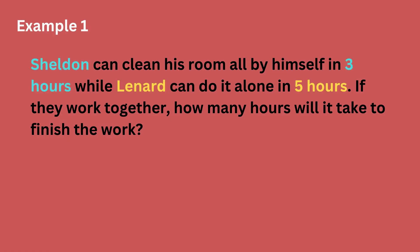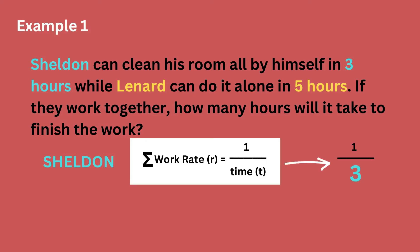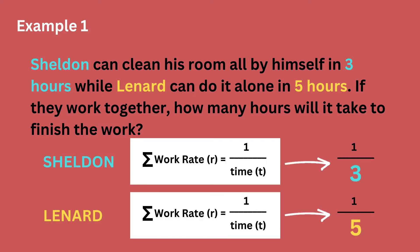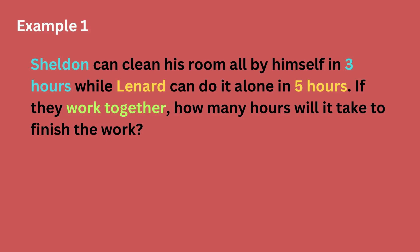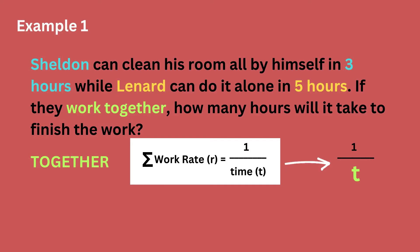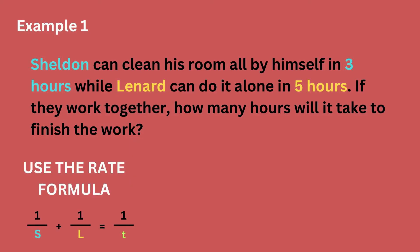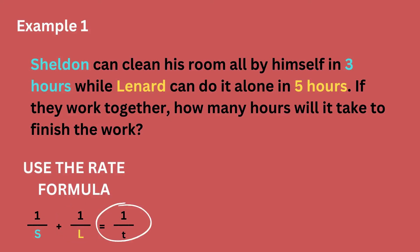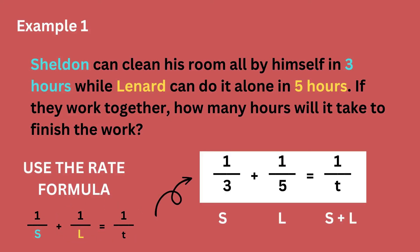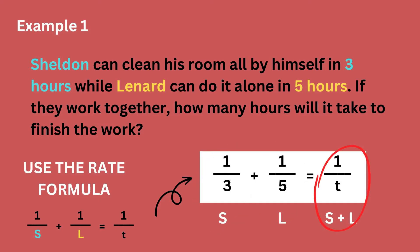Let us identify the given. For Sheldon, for one work done, he can do it in three hours — hence, one over three. While for Leonard, he can do it in five hours — hence, one over five. The question was how many hours will it take if they do the work together? For together, that will be one over T. The formula would be Sheldon's rate plus Leonard's rate equals to their rate together. Substituting: one over three plus one over five equals to one over T.